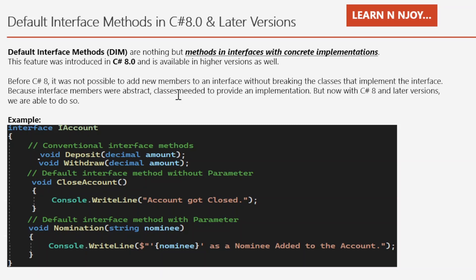There is an interface called IAccount. It has two method signatures without a body in the conventional way — deposit and withdraw — that accept a decimal parameter named amount and return type void. In this interface, I have introduced two default interface methods: one is close account, which is a parameterless default interface method.